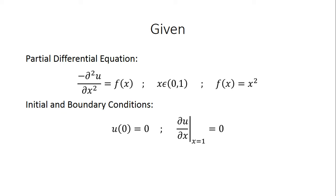We are also given our initial condition, which is u of 0 equals 0, and our boundary condition, which is the partial derivative of u with respect to x at x equals 1 is equal to 0.